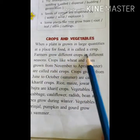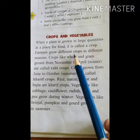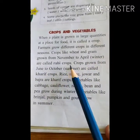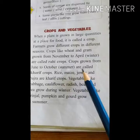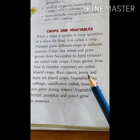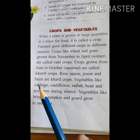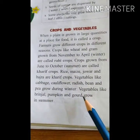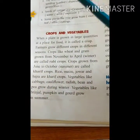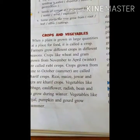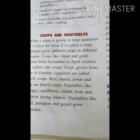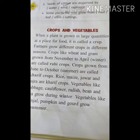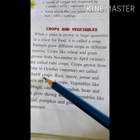Next topic is crops and vegetables. When a plant is grown in large quantities for food, it is called a crop. Farmers grow different crops in different seasons. Crops like wheat and gram grown from November to April in winter are called Rabi crops. Crops grown from June to October in summer are called Kharif crops. Rice, maize, jowar, and bajra are Kharif crops.